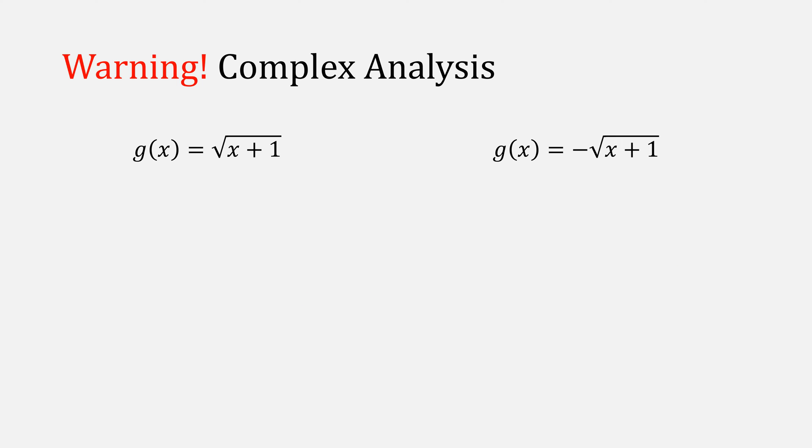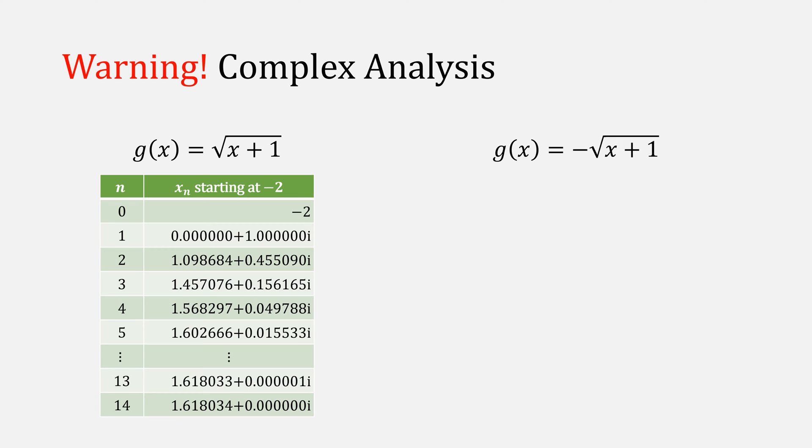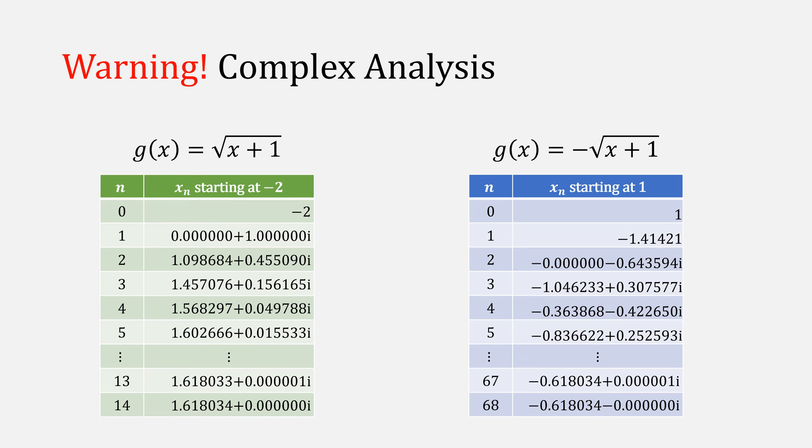You should still be careful when using square roots because this might lead to you needing to use complex analysis. For example, our function on the left, if we start at minus 2, it eventually converges after 14 iterations, but you have to use complex math. Our function on the right will also converge to our second root if we start at the value of 1, only after 60 something iterations using complex analysis.